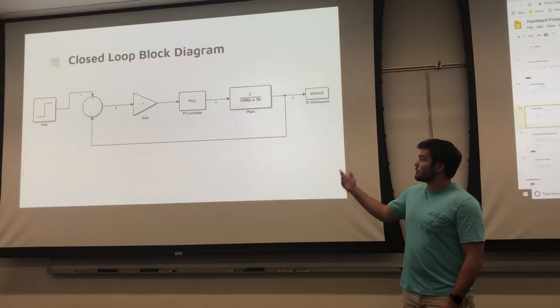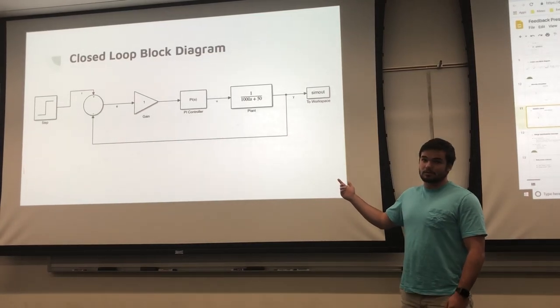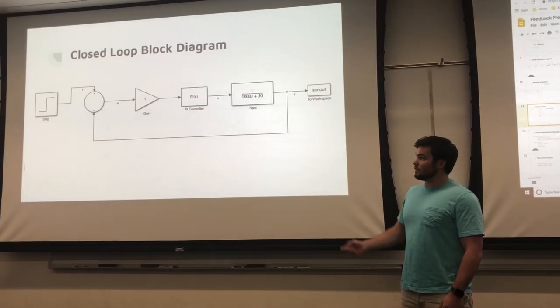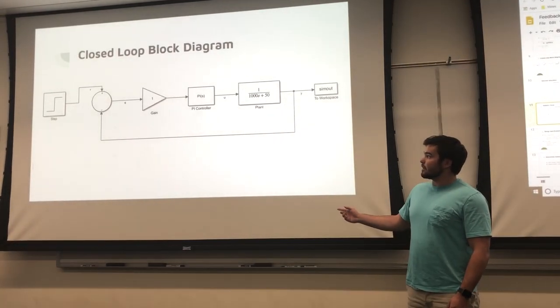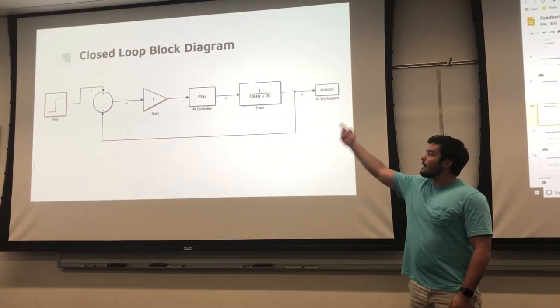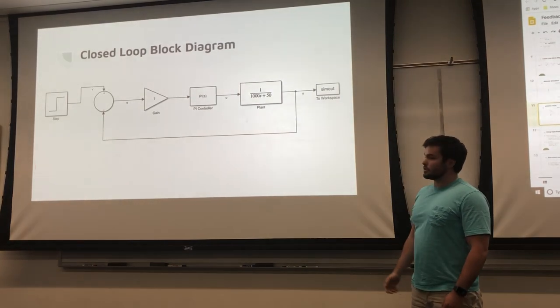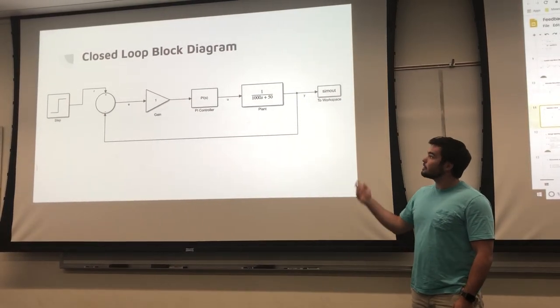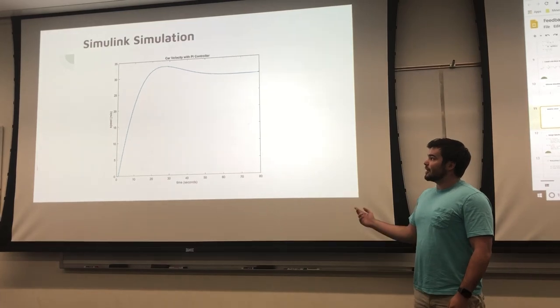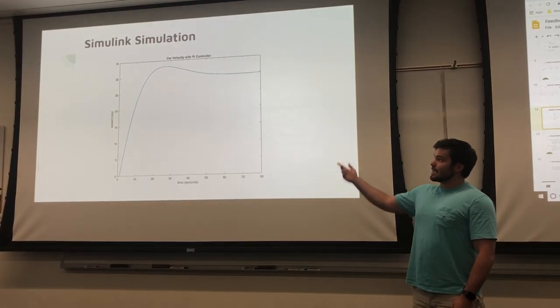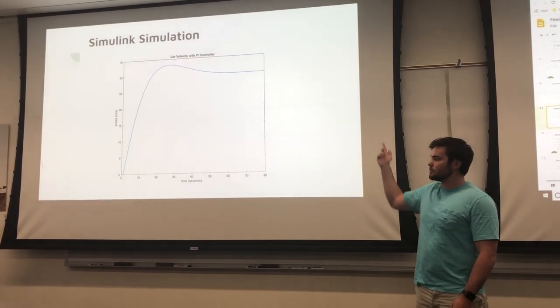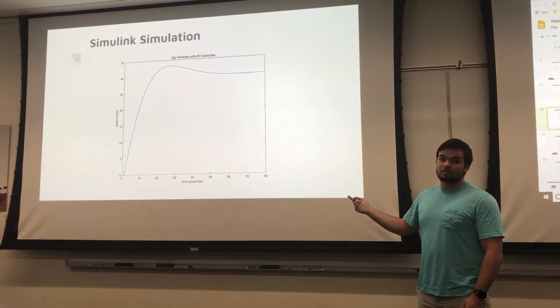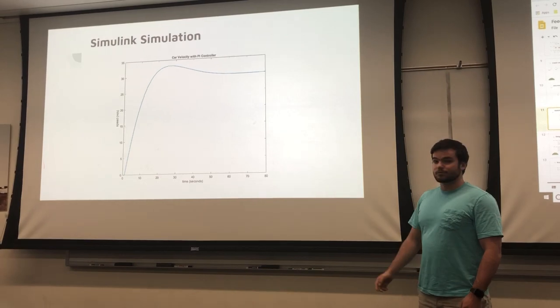Here is our closed-loop block diagram as designed in Simulink. We're having a reference velocity in this step of 30 meters per second. There are our values for the PI controller and our open-loop transfer function. As you can see by the Simulink simulation, our car does settle to the desired value of 30 meters per second. There is some overshoot time, but the rise time is much better than the initial values.